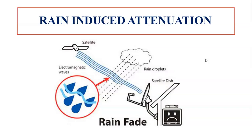Whenever the satellite is sending a signal from the space segment to the ground station, the signal will get interfered with, deviated, and decreased due to various reasons. One such reason is rain-induced attenuation. Because of this, whenever there is rain, DTH (Direct to Home) channels get affected, as the signal transmission from the satellite to the DTH antenna is disturbed by rain droplets.